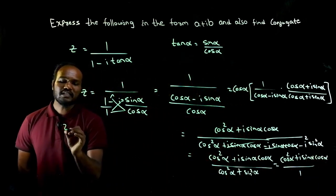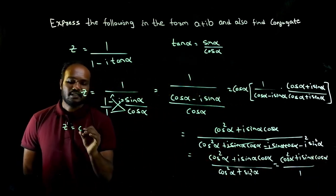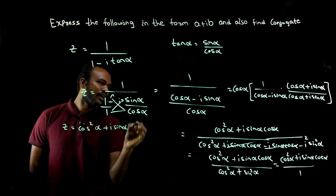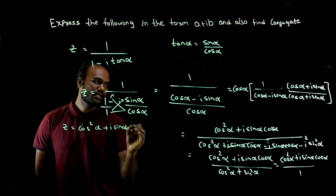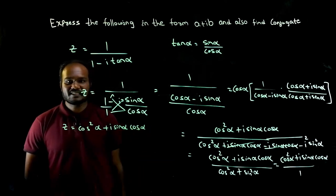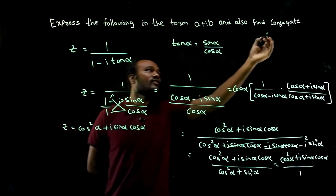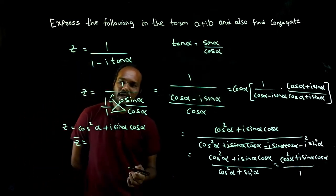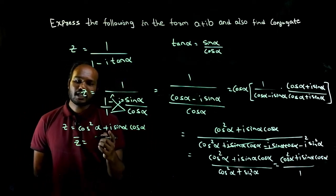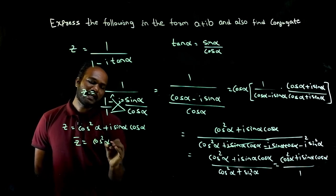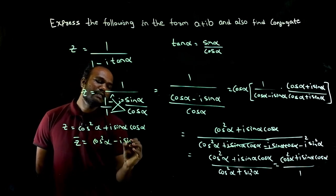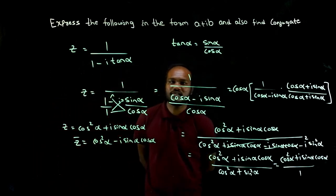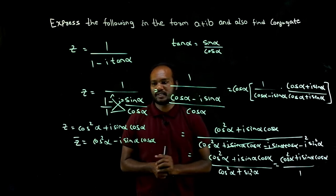If this is Z, what is Z? Z is nothing but cos square alpha plus I into sin alpha cos alpha. If this is Z, conjugate, they have asked you to find conjugate. Conjugate is Z bar. Conjugate of Z is Z bar. It is nothing but you just have to change the sign. It is cos square alpha minus I sin alpha cos alpha. Is that okay? Yes or no? Yes? Okay.